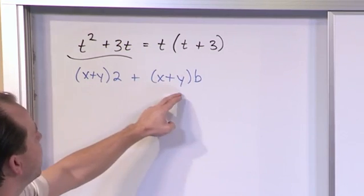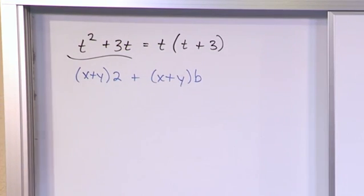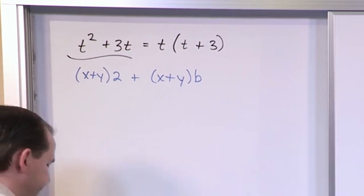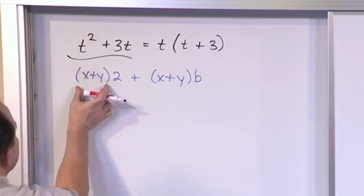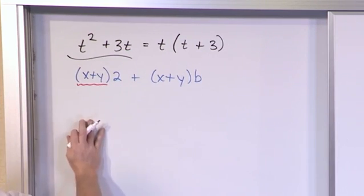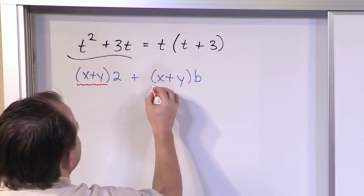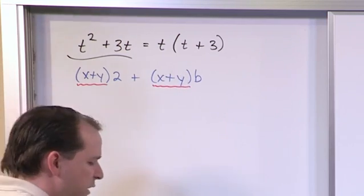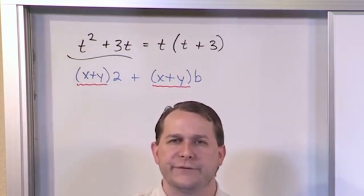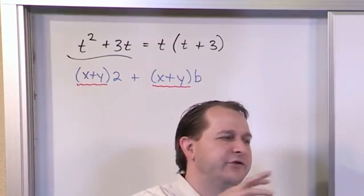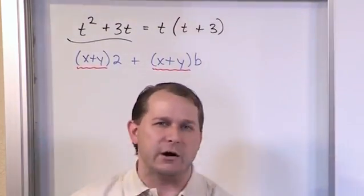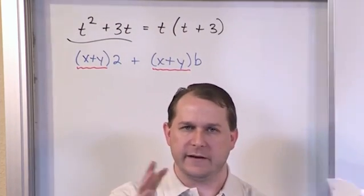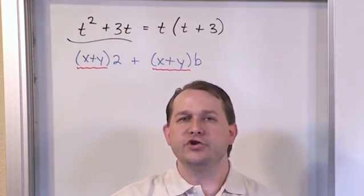I do see some x's and some y's but it looks totally different than any of the other problems that we've ever had to deal with. So at first you're unsure. Until you realize that here the term I have in parentheses is x plus y. Here the term I have in parentheses is also x plus y. So what you're going to find out is that when you're factoring you don't always have to just pull one item out like we've been doing. You can pull entire terms out as long as they're common to everything.